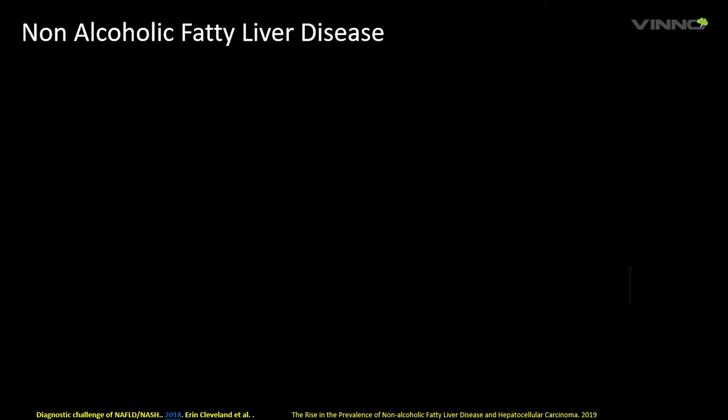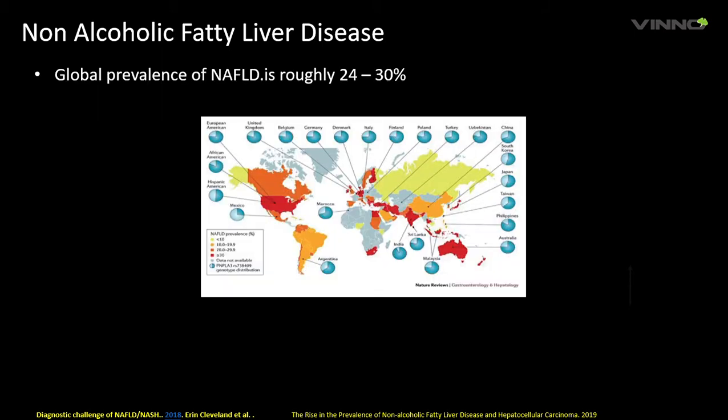We would like to share one such application in liver. Non-alcoholic fatty liver disease, NAFLD, is considered a silent epidemic across the world with a global prevalence of 24 to 30 percent. It is one of the reasons for chronic liver disease, besides viral hepatitis B, hepatitis C, and other pathologies. Early detection helps in disease management and probable reversal or reduction in the rate of progression.